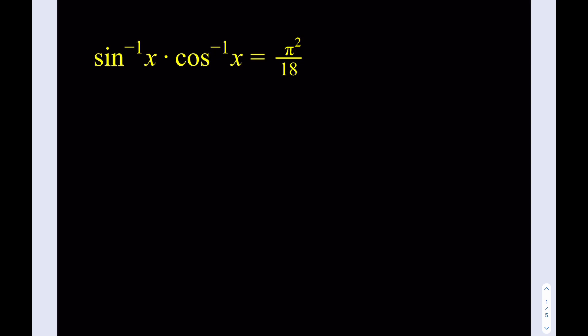Alright, so we have sine inverse of x multiplied by cosine inverse of x being equal to pi squared over 18, and we're supposed to solve for x. By the way, when I say sine inverse, I'm not talking about the reciprocal, I'm talking about the inverse function here. So how do we solve this problem?